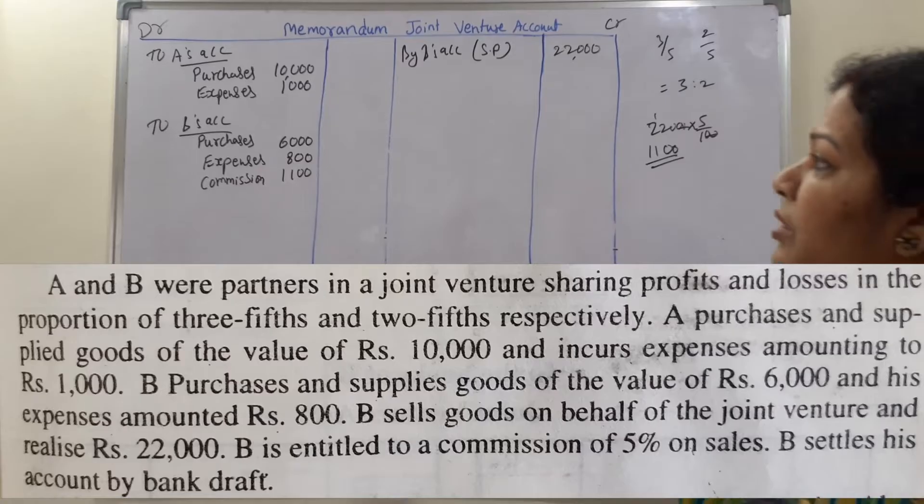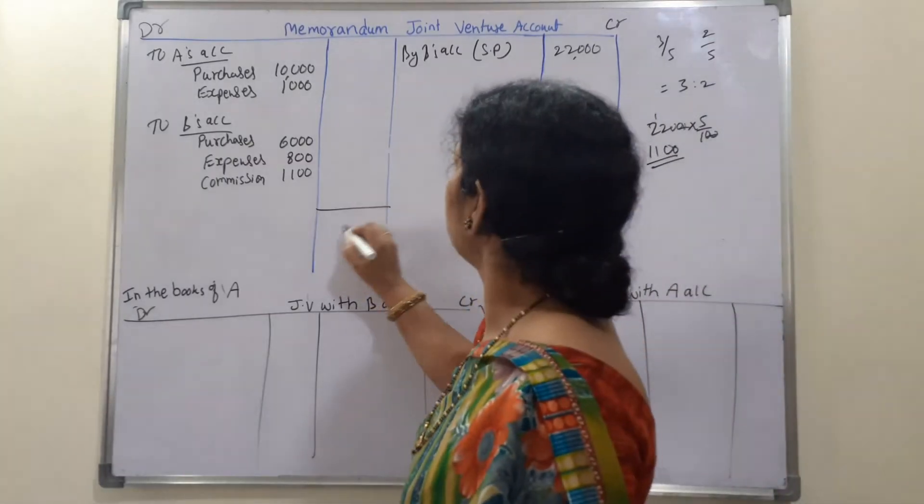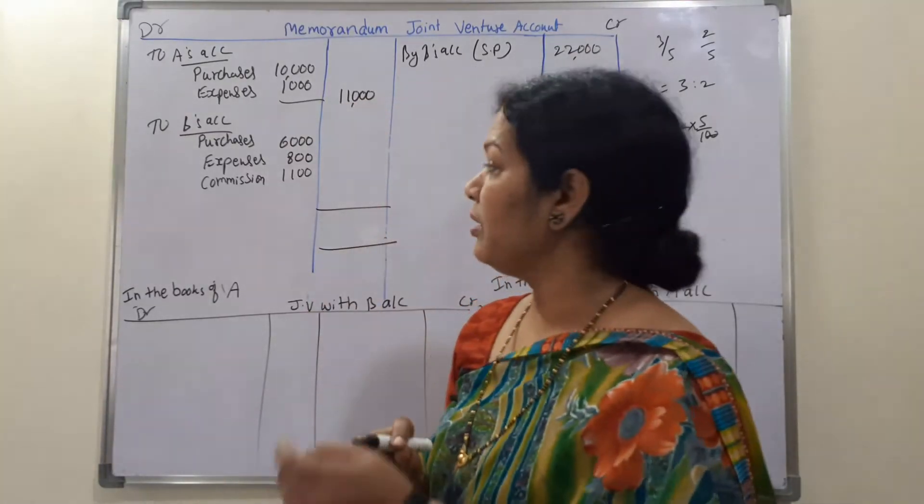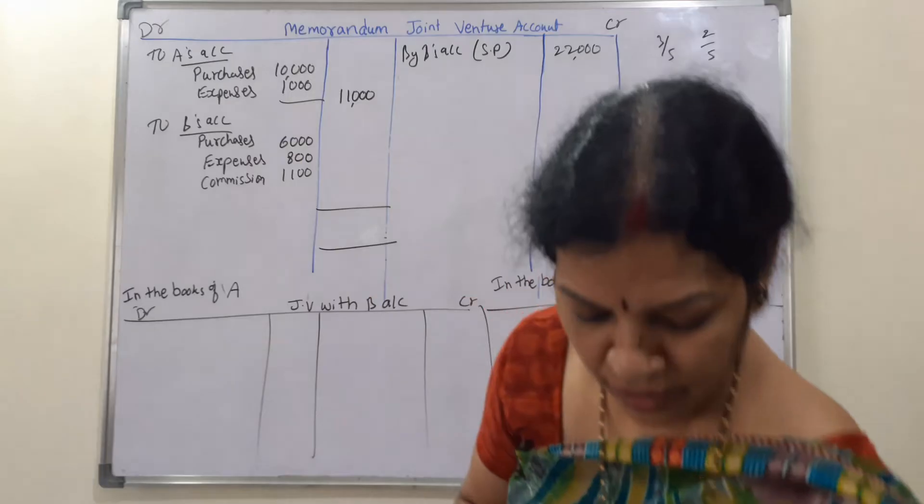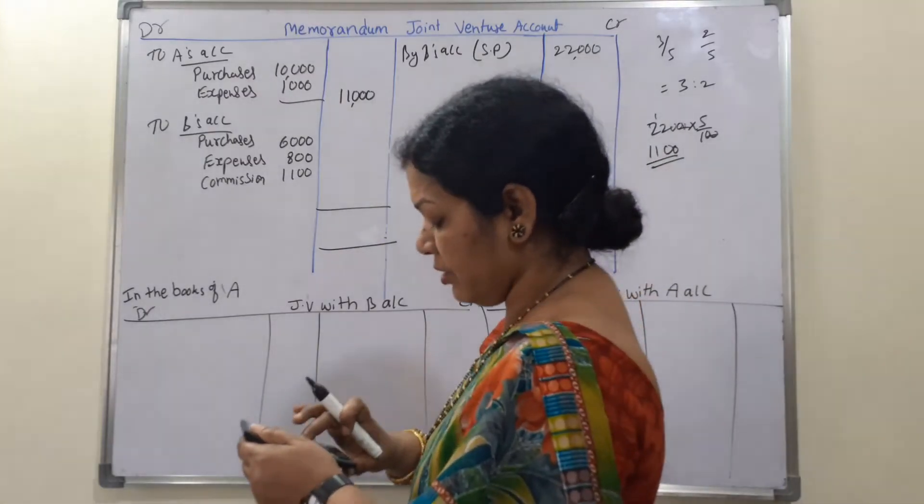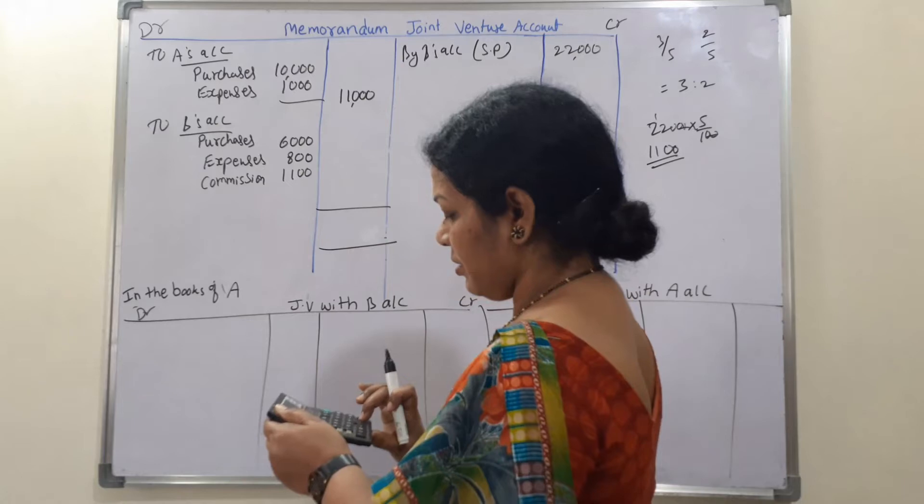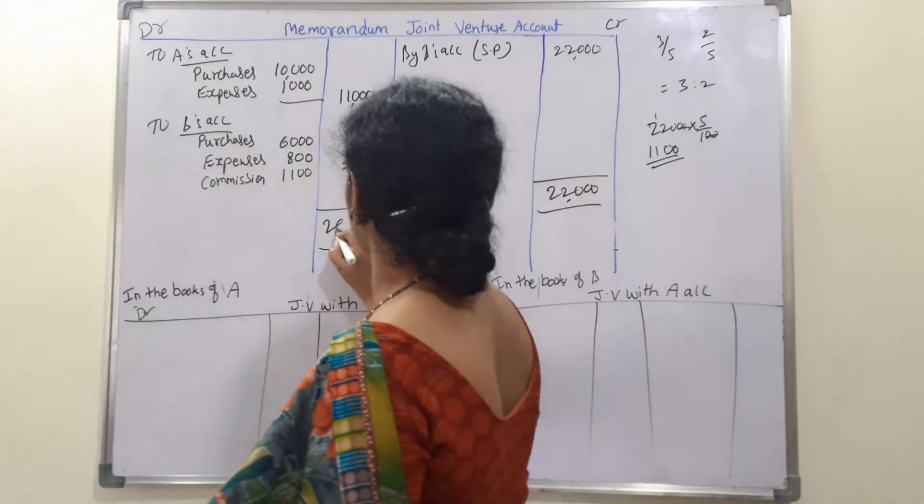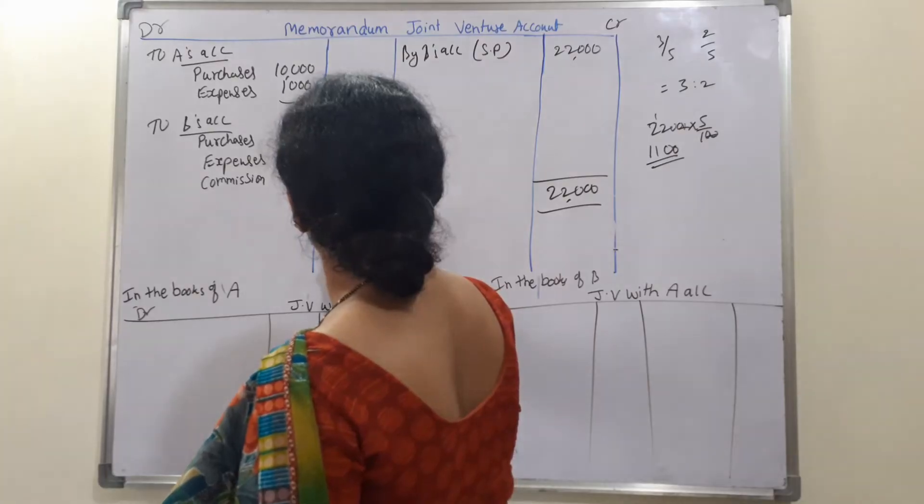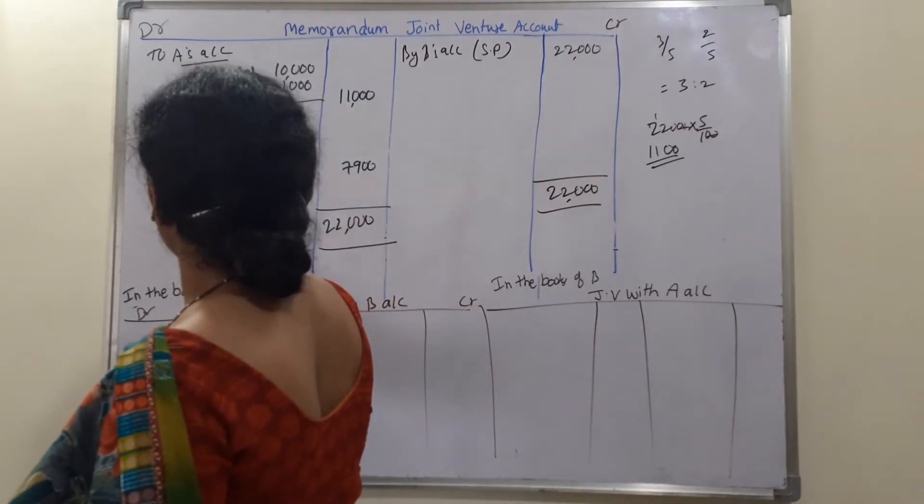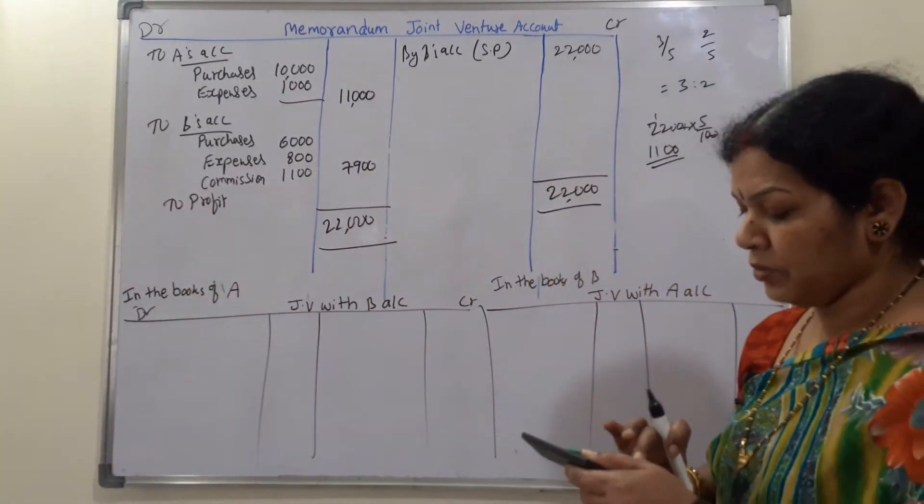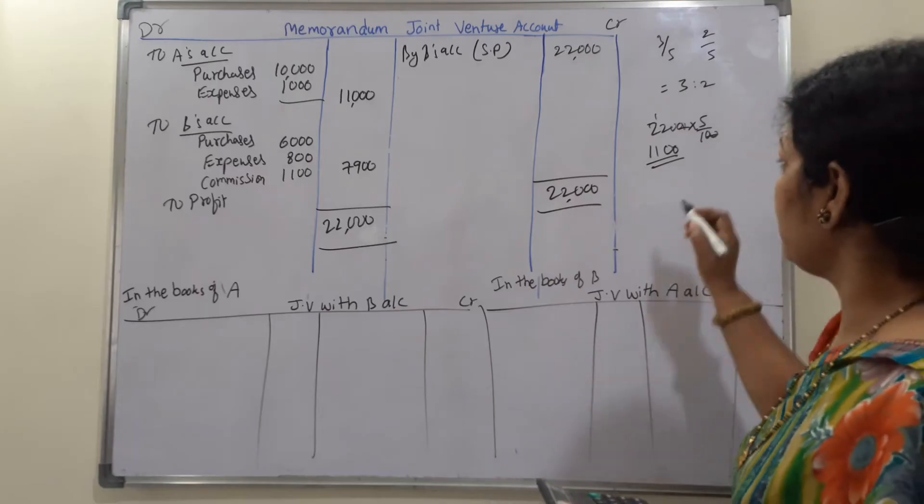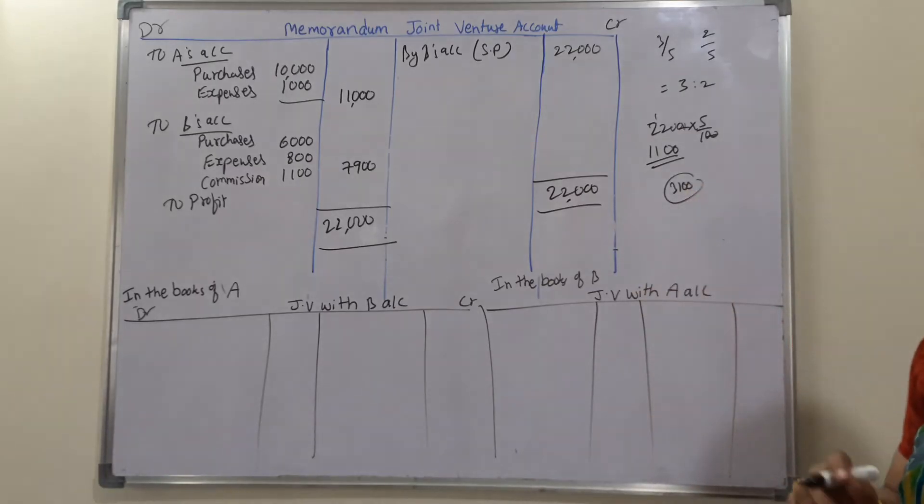So we have written everything. Now we will close this first memorandum joint venture account. First A's expenses are 11,000 total A's amount, and B's is here 6,000. We will use the calculator: 6,000 plus 6,800 plus 11,000, it is 7,900. So this is 22,000 to profit. How much profit we are going to get?